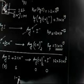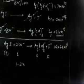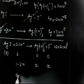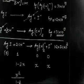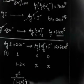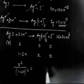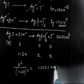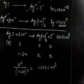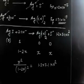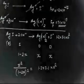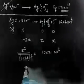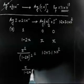Setting up the ICE table: CN⁻ changes by −2x, giving 1 − 2x at equilibrium; Ag(CN)₂⁻ and I⁻ each change by +x, giving x at equilibrium. The equilibrium expression is x² / (1 − 2x)² = Ksp × Kf = 1.2 × 7.1 × 10². Taking the square root of both sides: x / (1 − 2x) = √(1.2 × 7.1 × 10²).